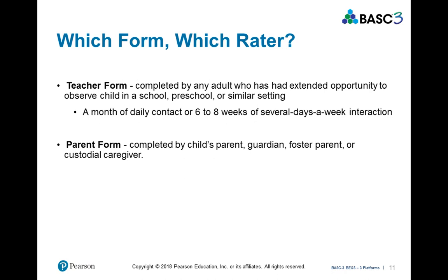The most comprehensive method of gathering behavioral and emotional information on a group of students or adolescents is to use both the teacher and the parent forms when possible, and then for those students in grades three and above, to also use the student form as well. More sources of information provide a better idea of the challenges that the child is facing. When using the parent forms, you can use forms with both parents. If only one parent is available, it is best to use the parent who has the most opportunity to observe their child's behaviors.